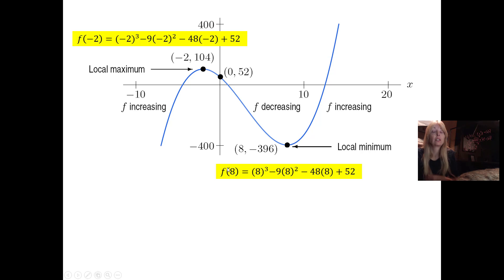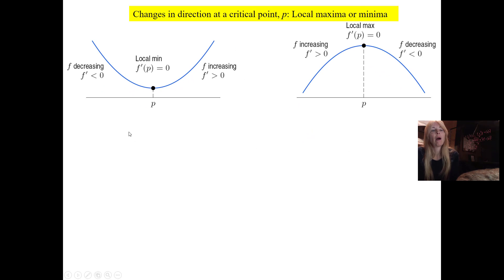It decreases, critical point, so that's where my derivative equal to zero, and then it starts to increase. So I can see now within this interval I have a local max and I have a local min. If your function is increasing, goes to zero, decreases, that's going to be a max. If it's decreasing, goes to zero, increases, that's going to be a min.